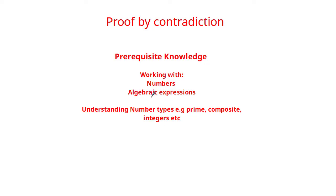You'll also need to understand different number types — for example prime numbers, composite numbers, integers and so on — and be comfortable expressing these number types in different ways. Let's crack on with the tutorial and understand what proof by contradiction is and why we use it.